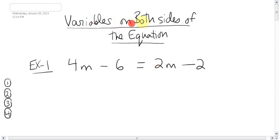Ok, here's the title. Variables on both sides of the equation. What does that mean? This. Take a look at this question. What jumps out at you about this? What's different about this equation compared to all the other ones we've been doing so far?